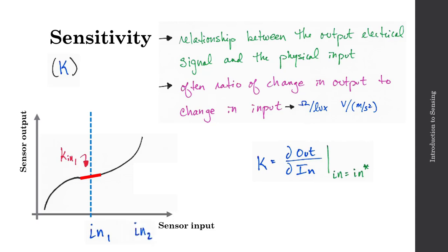At a different sensor input, let's call that in2, I'll have a different sensitivity because I have a different slope of my curve. And in this case, my sensitivity K at input 2, that's much higher. The slope of the curve at input 2 is much higher than the slope of the curve at input 1.